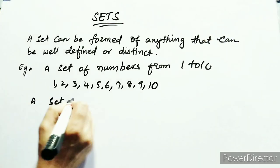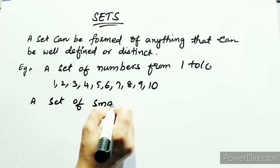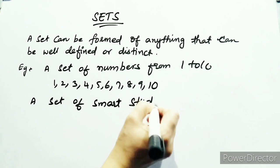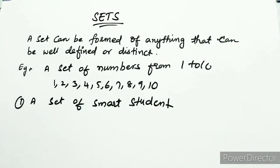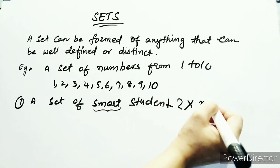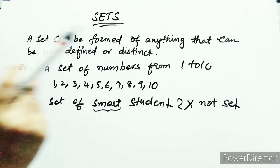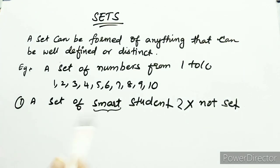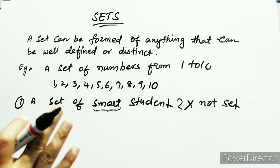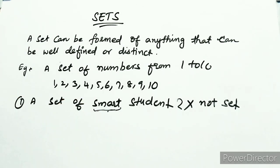Take an example: a set of smart students. Is it a set? No. You are using the word 'smart' — it is not a set. A set must be well defined or distinct. You are saying a set of smart students, but 'smart' cannot be defined or measured. These are relative terms.